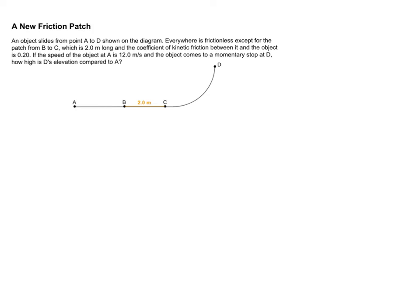So I often see students do this question in two parts. They do an analysis from B to C, calculate something, calculate their speed at point C, and then focus on C to D to calculate how high it gets at D.